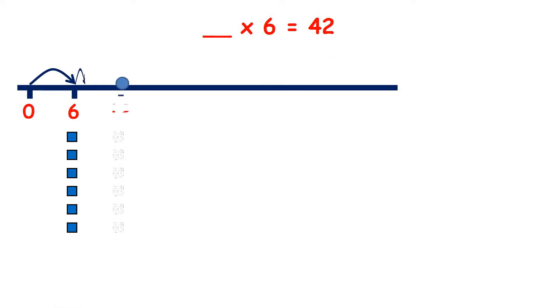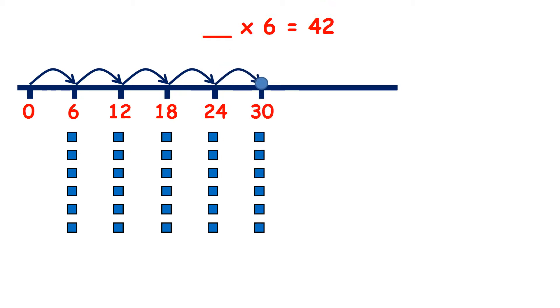6, 12, 18, 24, 30, 36, 42. So we needed 7 jumps to get to 42. So 7 times 6 is 42.